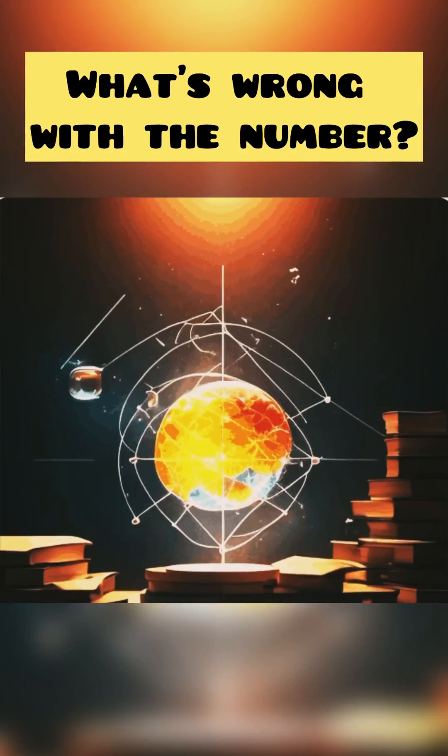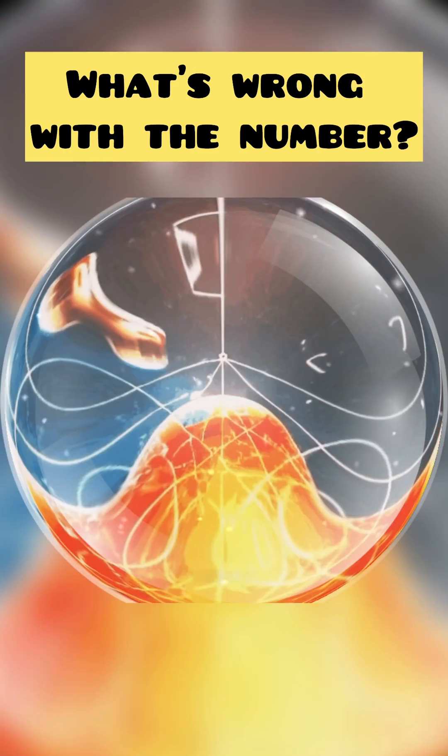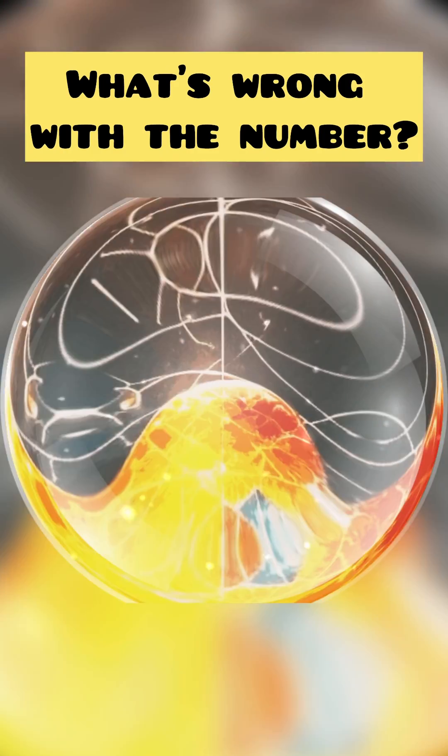What's wrong with the number? For more than a century, scientists have known that people easily determine the number of objects at a glance if there are fewer than 5.